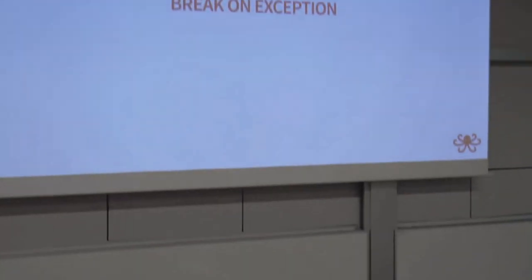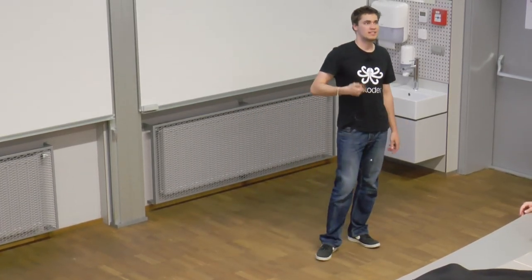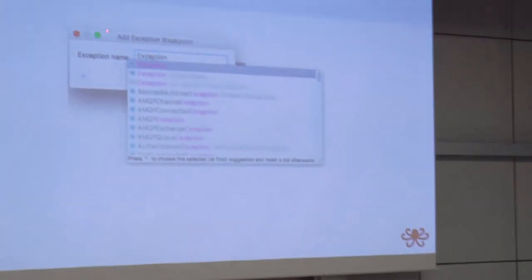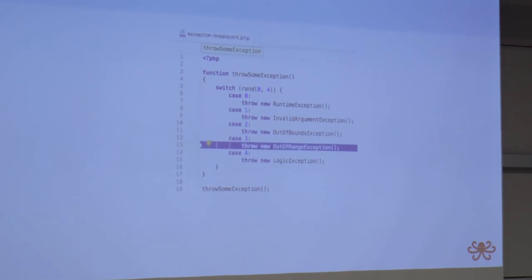Sometimes it can happen that in your error log you only have the exception and the request that caused it, but you don't have any details like the stack trace. What you can do, this is also a feature of Xdebug, you can create an exception breakpoint. We want to break on a root exception. Here is some code that throws random exceptions. When we run this, there is no breakpoint, but we still did break on a line that chose to throw exception.